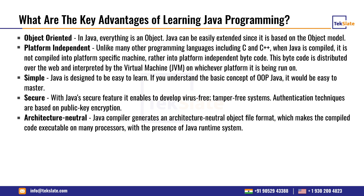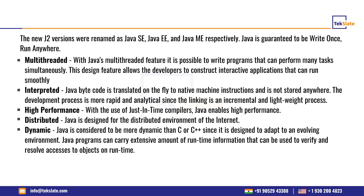The Java compiler generates an architecture neutral object file format, which makes the compiled code executable on many processors with the presence of the Java runtime system. Java is also multithreaded. With Java's multithreaded feature, it is possible to write programs that can perform many tasks simultaneously. This allows developers to construct interactive applications that run smoothly. When we do the multithreading topic, you will see how you can run more than one program at a time.